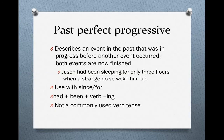The past perfect progressive describes an event in the past that was in progress before another event occurred. It is important to note here that both events are now finished. For example: Jason had been sleeping for only three hours when a strange noise woke him up. Had been sleeping is the past perfect progressive — an event that was in progress before another event in the past, which was the strange noise waking him up.